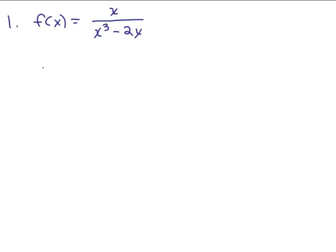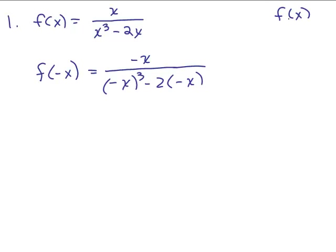So what we need to do is see what happens when we plug in negative x for x. We have to do f of negative x, so we plug in negative x in place of all the x's. Now remember, if our answer ends up being f of x, the same thing, that means it's even. And if our answer is negative f of x, that means it's odd. And if neither of those things happens, it's neither.